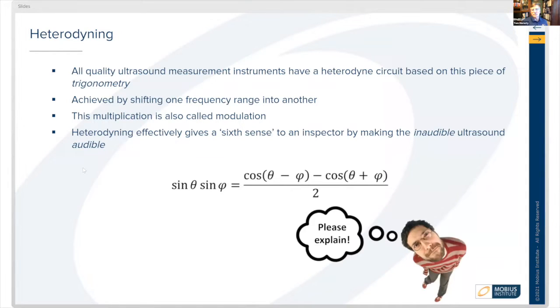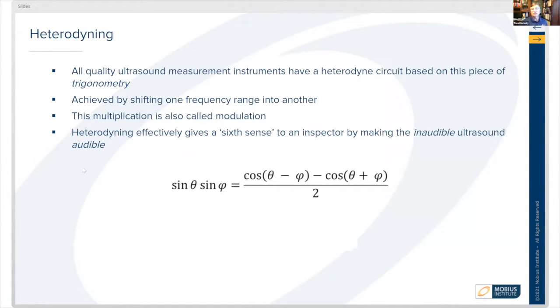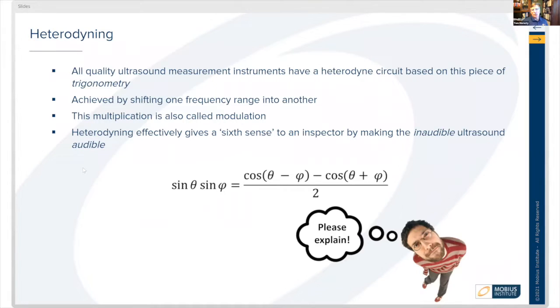So, what is heterodyning? All quality ultrasound instruments use heterodyning as a basis for how it works, and it's based on trigonometry. In this level one course, we're not going to ask you to solve equations like this, but we want to familiarize you with what it is that makes this ultrasound technology work, what's behind the box. What happens with heterodyning is we're shifting one frequency range for another. Basically, there's a multiplication that happens between two different frequencies, and you're looking at the difference in the sum of those frequencies. So, what heterodyning does is it allows us to hear the inaudible.